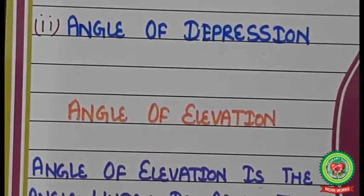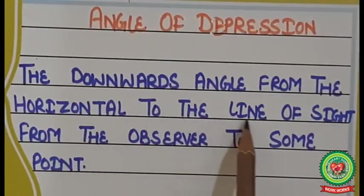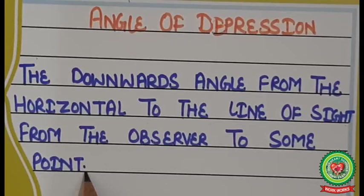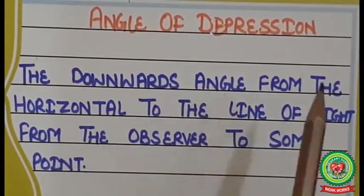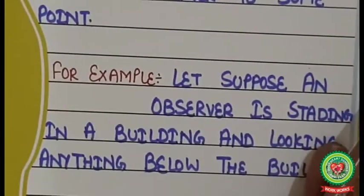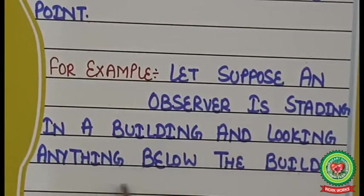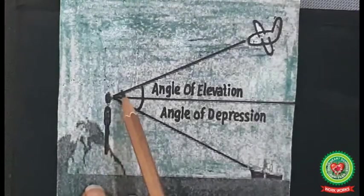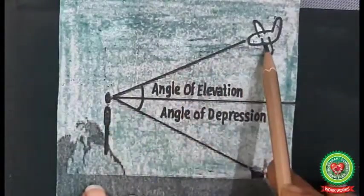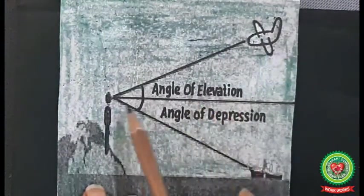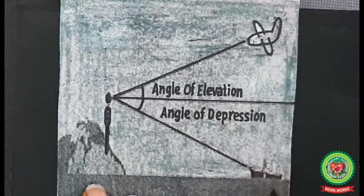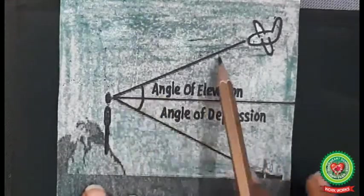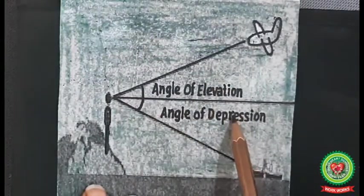The angle of depression is the downward angle from the horizontal to the line of sight from the observer to some point below. So, angle of elevation is the upward angle and angle of depression is the downward angle. For example, an observer standing in a building looking at something below. In the figure, if the observer looks upward toward an object, that is the angle of elevation; if looking downward, that is the angle of depression.